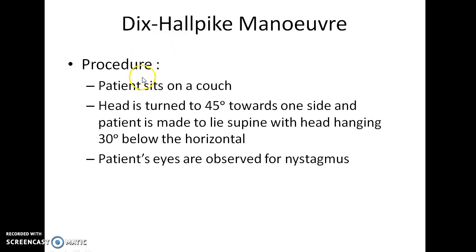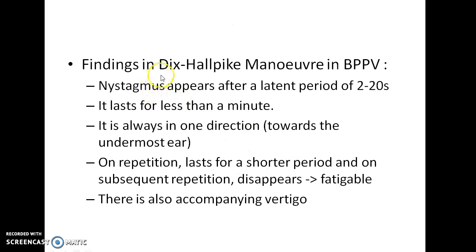In the Dix-Hallpike maneuver procedure, the patient sits on a couch, the head is turned 45 degrees towards one side, and the patient is made to lie supine with the head hanging 30 degrees below the horizontal. The patient's eyes are observed for nystagmus. Findings include: nystagmus appears after a latent period of 2 to 20 seconds, lasts for less than a minute, is always in one direction towards the undermost ear, and on repetition the nystagmus lasts for a shorter period and eventually disappears — that is, the nystagmus is fatigable. There is also accompanying vertigo.